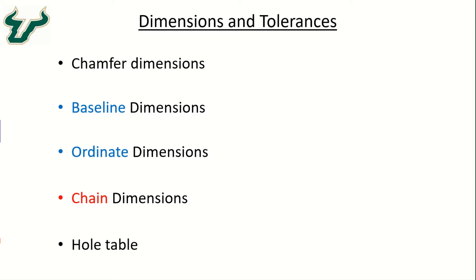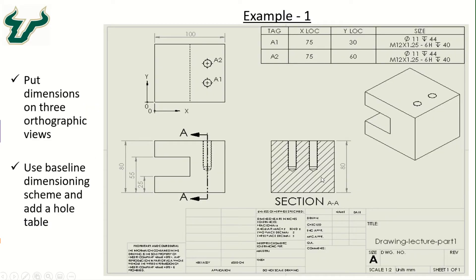In the next example we will first take a look at how to create a hole table on the engineering drawing, and also how to use a baseline dimensioning scheme for this solid model. On the drawing sheet we have placed a front view, the top view, and the right view which is a sectional view. The section is taken using the vertical line AA, and the sectional cut line passes through the axis of these two holes. Now let's go to SOLIDWORKS and start working on this part file.